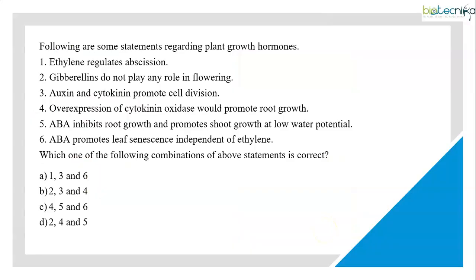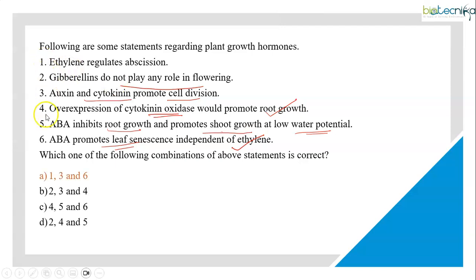The last question is a miscellaneous combination question involving multiple hormones. The statements are: 1) Ethylene regulates abscission; 2) Gibberellins do not play any role in flowering; 3) Auxin and cytokinin promote cell division; 4) Overexpression of cytokinin oxidase would promote root growth; 5) Abscisic acid inhibits root growth and promotes shoot growth at low water potential; 6) Abscisic acid promotes leaf senescence independent of ethylene. The correct combinations are statements 1, 3, and 6. Ethylene regulates abscission along with auxin — both are primary hormones involved in the abscission zone.